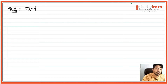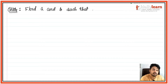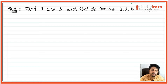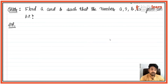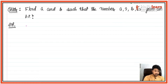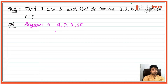Question hai: find a and b such that the numbers a, 9, b, 25 form an AP. Is question mein kaha ja raha hai ki yeh AP form kar raha hai. Humare paas sequence di hui hai: a, 9, b, 25.